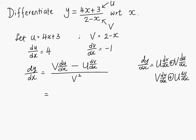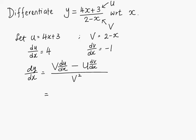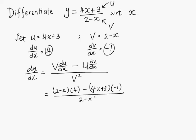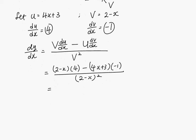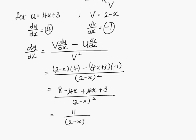Now let's put in the functions. So v is 2 minus x, multiplied by du/dx which is 4, subtract u which is 4x plus 3, multiplied by dv/dx which is negative 1, divided by v squared. Expanding the numerator: 8 minus 4x plus 4x plus 3, over 2 minus x squared. Simplifying, you get 11 over 2 minus x squared. And that is the answer for dy/dx.